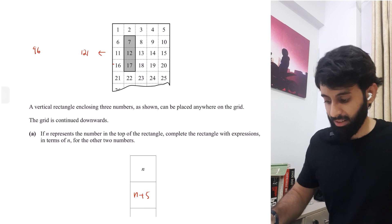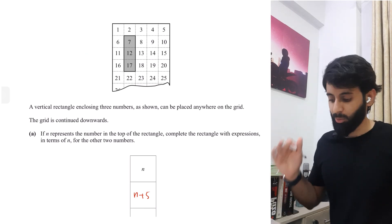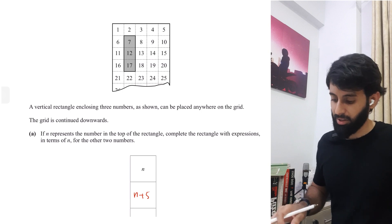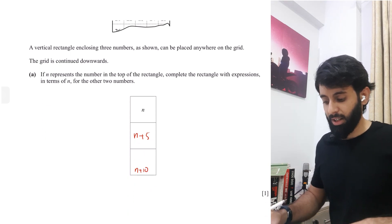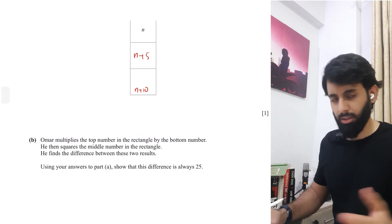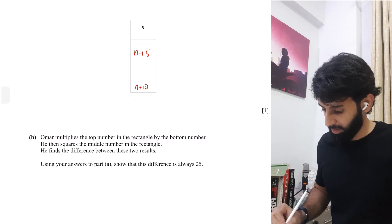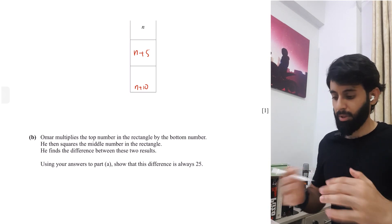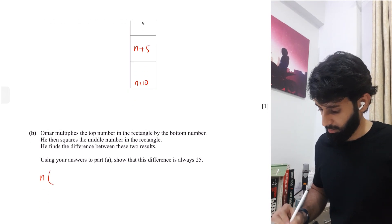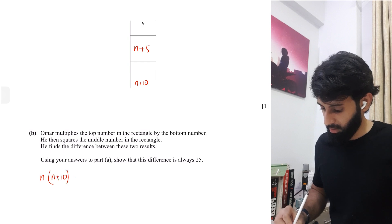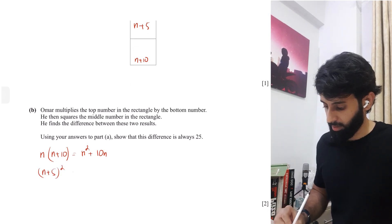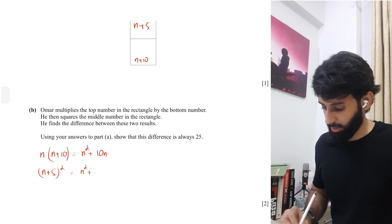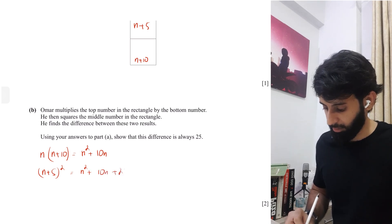But see this time we did it with actual numbers, but what we're supposed to do here is we're supposed to show that this is always equal to 25. And for that we'll have to use their terms in terms of n. So we can do that now. Multiplying the two numbers, the top and the bottom numbers n and n plus 10 gives us n square plus 10n. Squaring the middle number which is n plus 5, the whole thing squared will give us n square plus 10n plus 25, the identity.